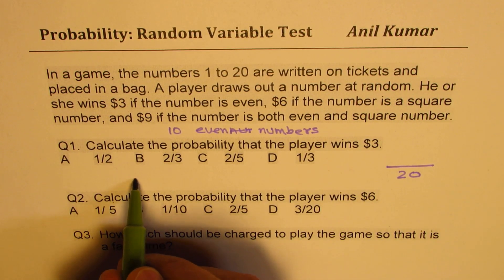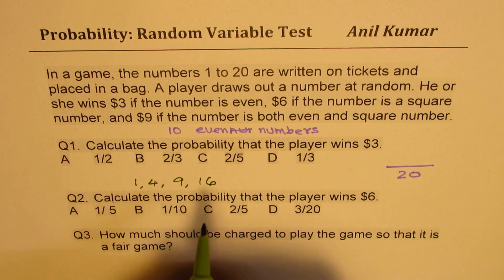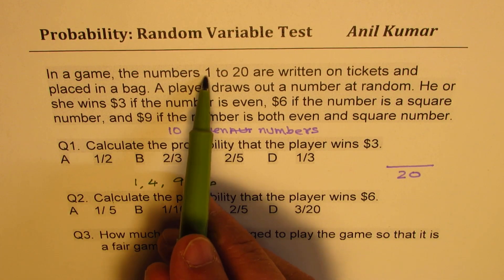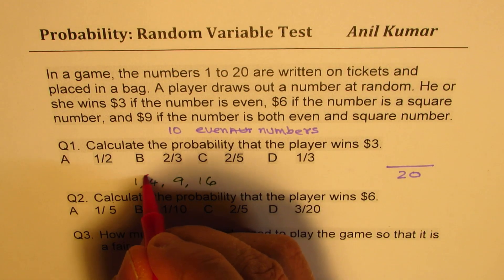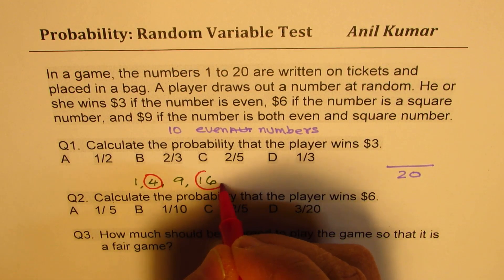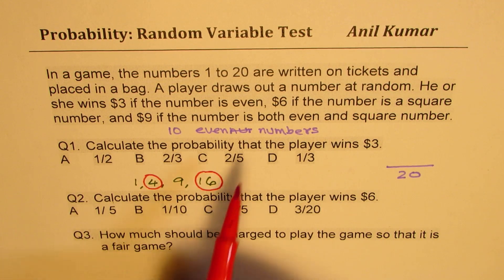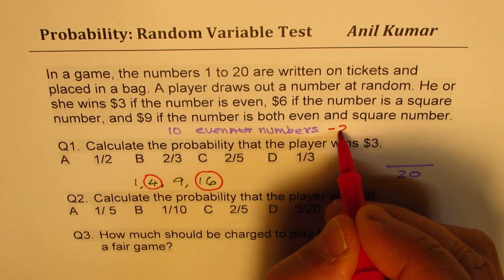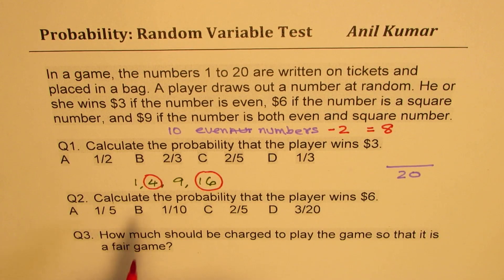The square numbers are: square of 1, which is 1; square of 2, which is 4; square of 3, which is 9; square of 4, which is 16. So these are the square numbers in 1 to 20. Out of these numbers, you find that two numbers are even. So if you get these two numbers, then you're getting more than $3. So we'll take away these two numbers. So what are we left with? We're left with 8. 10 minus 2. Because for the square numbers, you earn more.